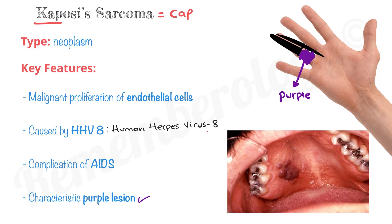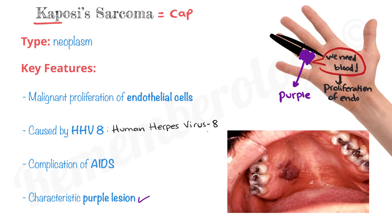Since we have cut off blood from this part, the cells in this part will scream, saying 'we need blood.' This will lead to proliferation of endothelial cells in an attempt to bring in more blood. So now we know that Kaposi's sarcoma is a malignant proliferation of endothelial cells.